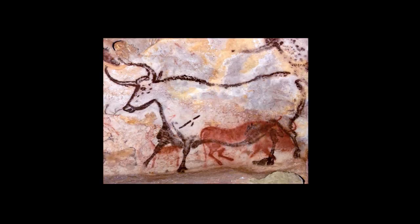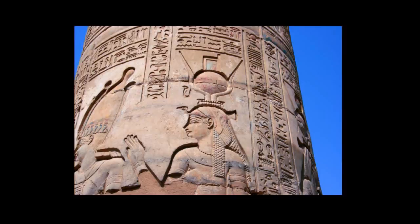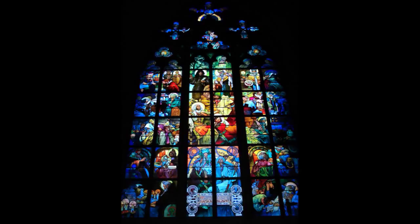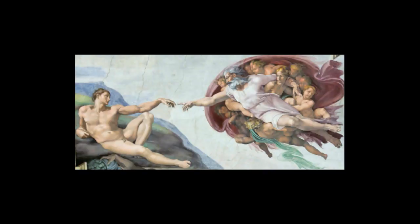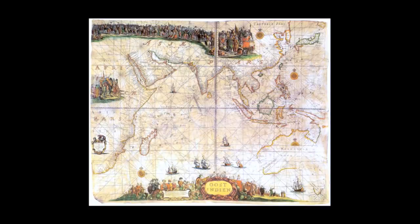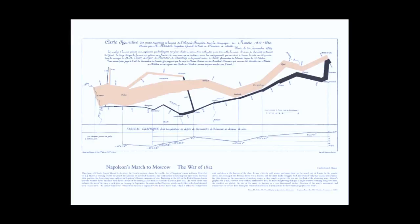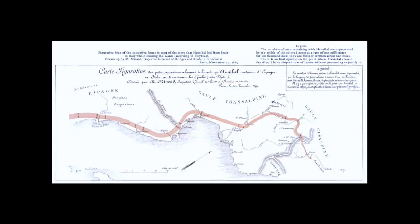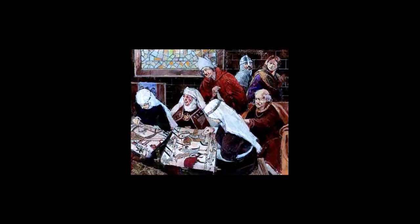We've developed this understanding of visual communication — this media literacy — for a very long time. From the caves of Lascaux to Egyptian hieroglyphs, to stories of God in stained glass — you could be illiterate or literate and understand what's going on. Maps are a great way to tell a story — pictures and words telling the story of conquest, armies, travel, adventure, empire. To tapestries, where people would spend time to put their stories into cloth to share with others.